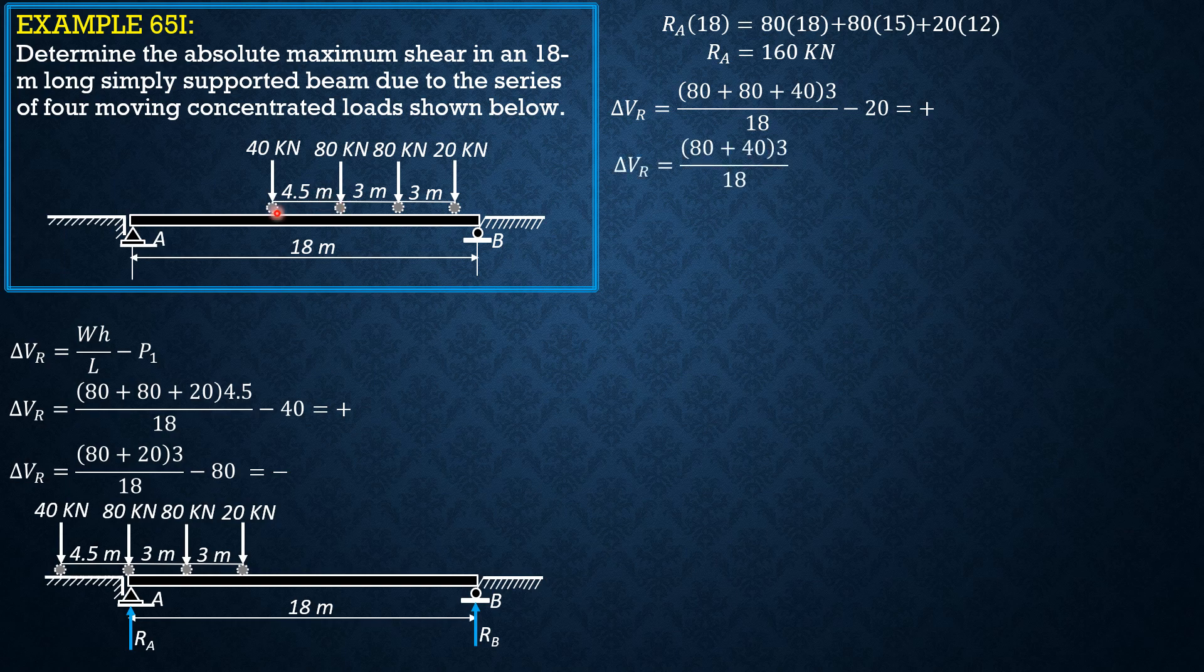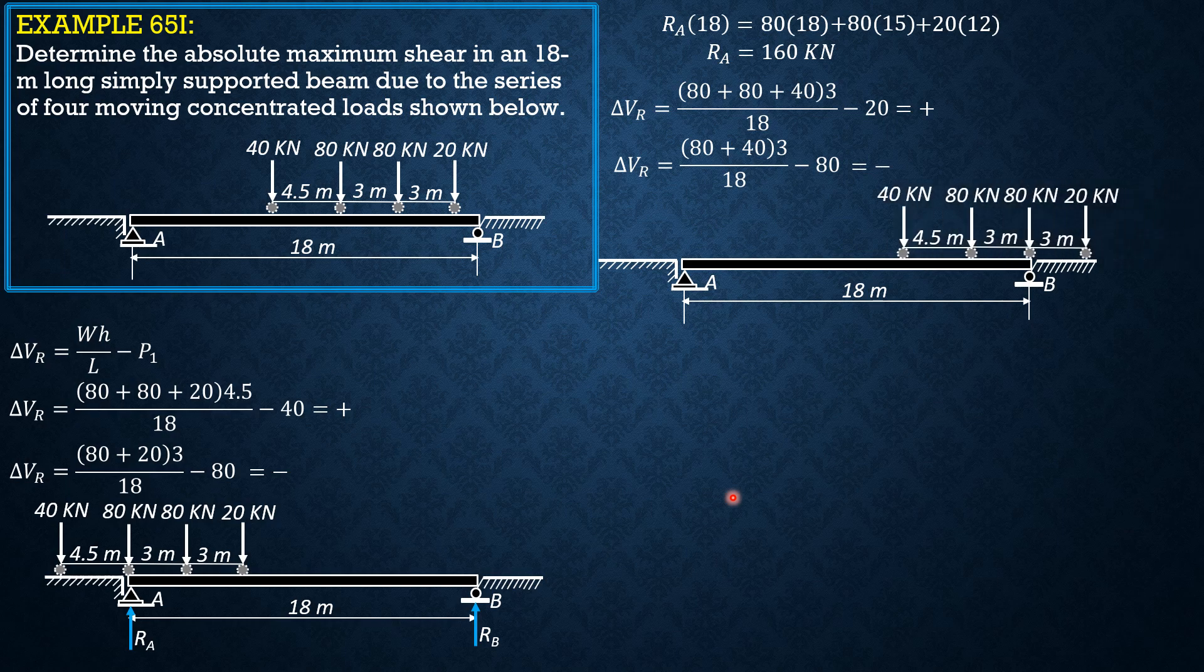80 plus 40 times 3 over 18 minus 80, and this time it is negative. Therefore the preceding position of the loads gives maximum reaction at B. That is, this 80 kilonewton load will be over B and this 80 and 40 on the span as shown in the figure.